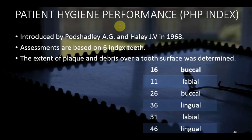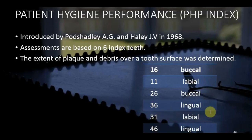The PHP Index was introduced by Podshadley and Haley in 1968. Similar to the Oral Hygiene Index Simplified, it uses the same six index teeth: 16, 11, 26, 36, 31, and 46. The same surfaces are examined — buccal or labial — except for 36 and 46, which use lingual, just as in OHI-S.